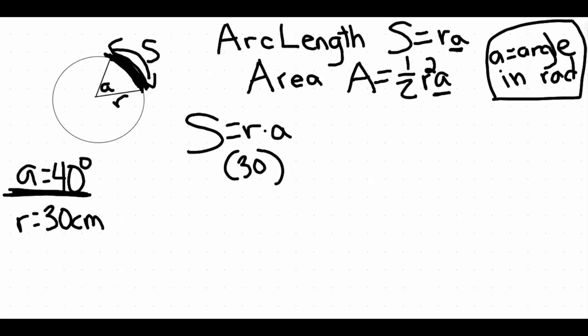A, we cannot just plug in 40. This A has to be in radians because ours was given to us in degrees. So what we're going to have to do is take our conversion to go from radians to degrees. The way that you do that is you take the degrees, so ours is 40 degrees, and you're going to multiply that by π over 180. And once we calculate this, this is going to be our angle in radians.